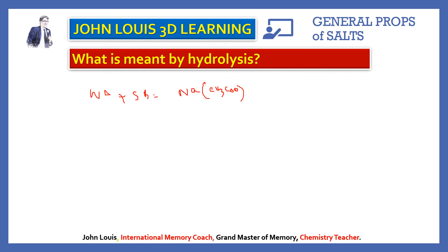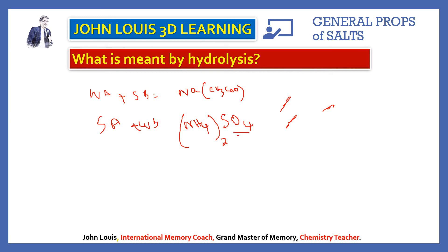Similarly, if you take a salt from a strong acid and a weak base: weak base is ammonium hydroxide, giving ammonium; strong acid is sulfuric acid, giving sulfate — so ammonium sulfate. This salt was formed from a weak base and a strong acid. When dissolved in water it will show a slightly acidic character. This phenomenon is known as hydrolysis — when a salt dissolves in water it shows acidic, alkaline, or neutral character.